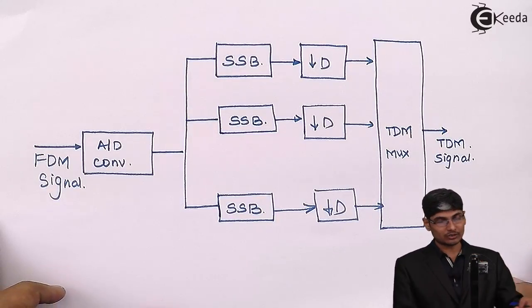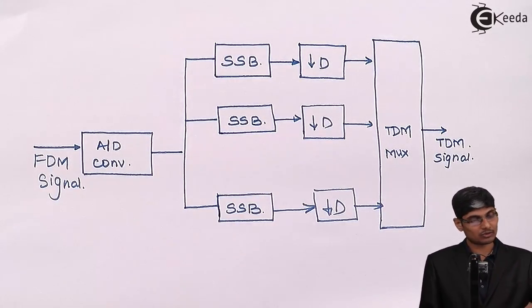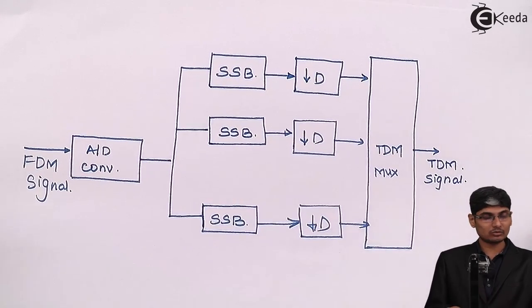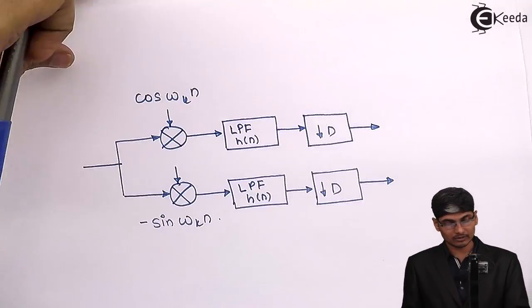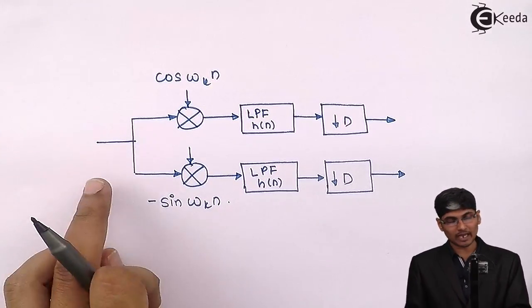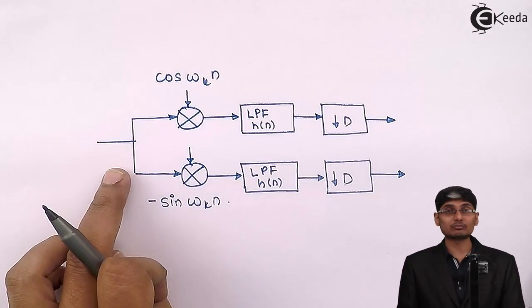How we perform this modulation, SSB modulation is being shown over here by showing an SSB, a low pass and a decimator. The signal comes as an input. We have two carriers, one is cos omega n and one is minus.